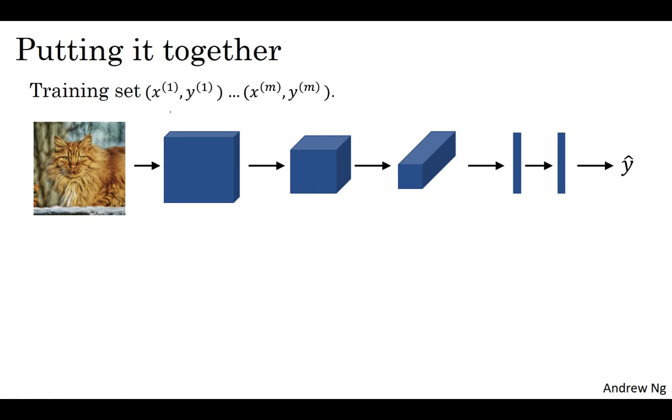Let's say you want to build a cat detector and you have a labeled training set as follows, where now x is an image and the y's can be binary labels or one of k classes.